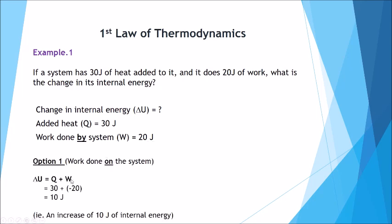From a chemistry perspective, we can say the change of energy is equal to the heat plus the work done on the system. The heat was 30 joules, and this is work done by the system, so we take away 20, which gives us an overall increase of internal energy of 10 joules. 30 plus negative 20 gives us 10 joules.